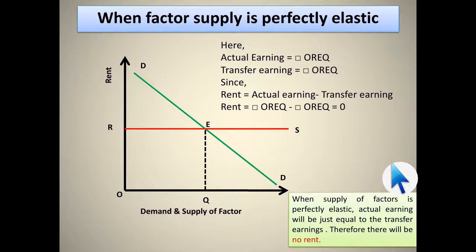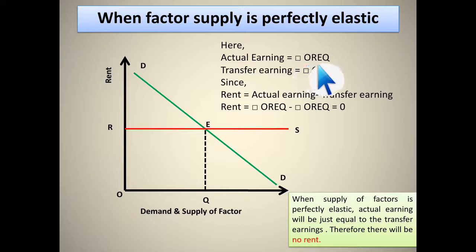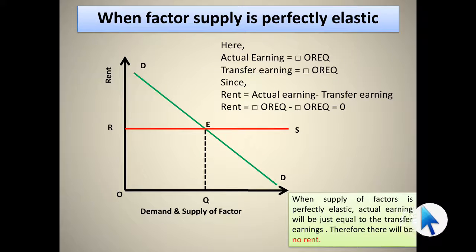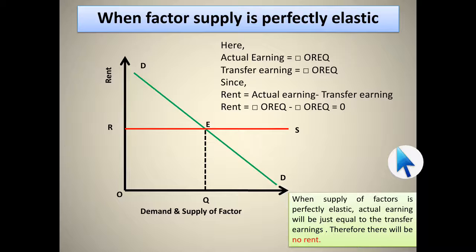When the factor supply is perfectly elastic, a very small change in price gives rise to an infinite change in supply. Whatever earning they have must be considered as transfer earning, because a very small change would lead the farmer to leave the business. Here, actual earning O-R-E-Q equals transfer earning O-R-E-Q, so the rent is zero. If in a competitive exam you are asked: when the factor supply is perfectly elastic, what is the rent? The answer is zero.